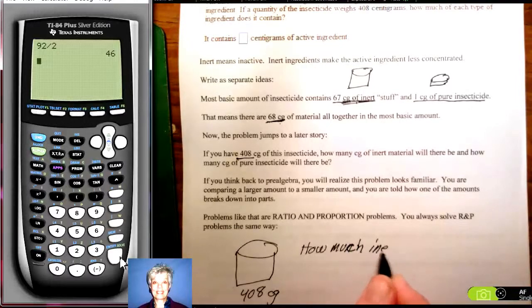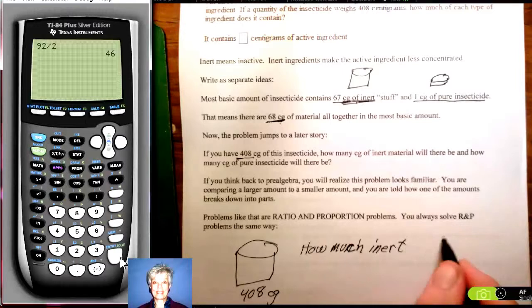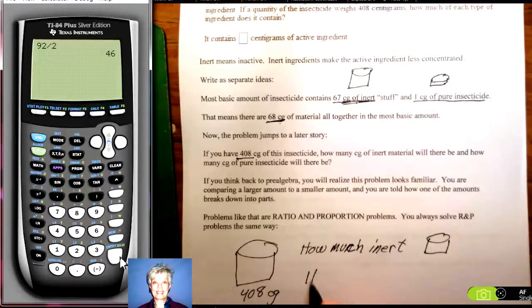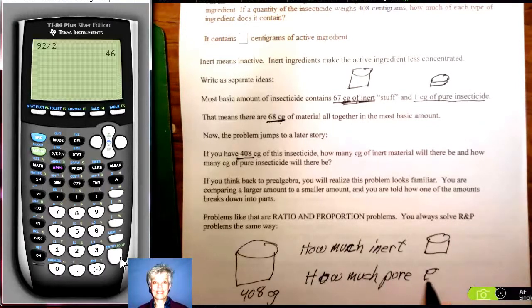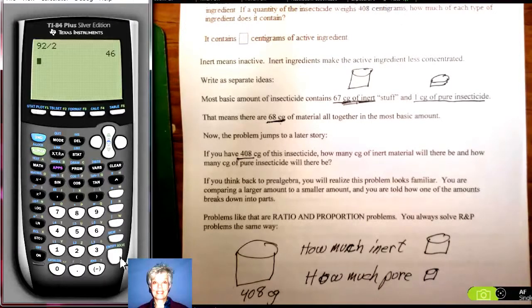I'm calling it pure, the active ingredient. There's always going to be less of the pure. The inert is put in with the pure to make it less strong. You want to be able to spread it around and kill a lot of insects.